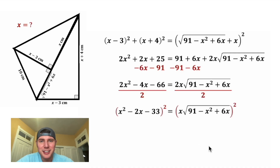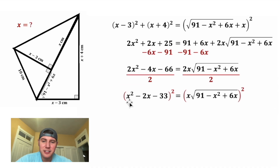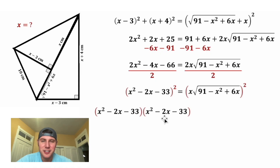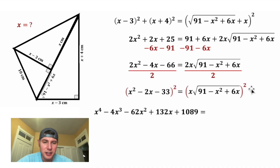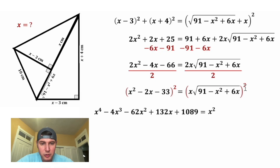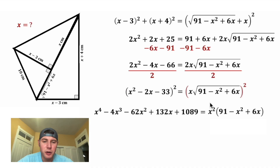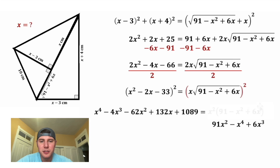Now we're ready to square both sides. On the left-hand side, squaring (x squared minus 2x minus 33) — I'll skip the full expansion — gives us the expanded polynomial shown here. On the right-hand side, squaring distributes to both the x and the square root: we get x squared, and the square root and the square cancel, leaving the stuff inside. Then distributing the x squared gives us 91x squared minus x to the 4th plus 6x cubed.